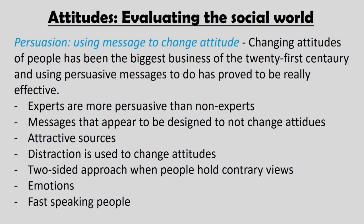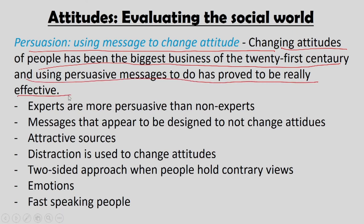This is the idea of how classical conditioning can affect attitudes. Now, if attitudes are strong and difficult to change and learned through so many processes, how do we change them? One way is through persuasion — using messages to change attitudes. Changing people's attitudes has been the biggest business of the 21st century. One way to change someone's attitude is giving them correct information, or giving them information contrary to the belief they hold — that is called a persuasive message.